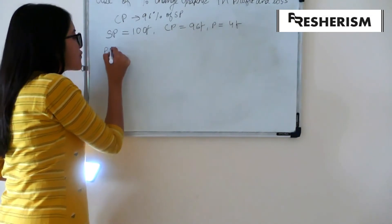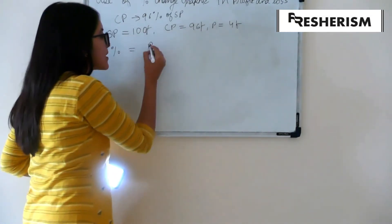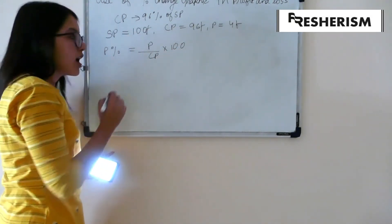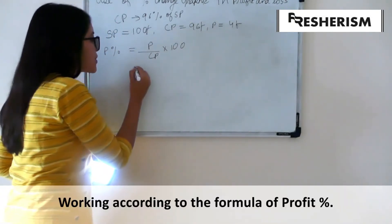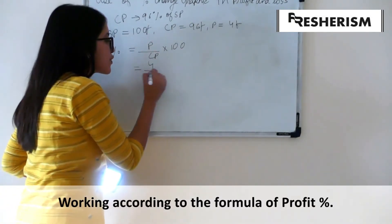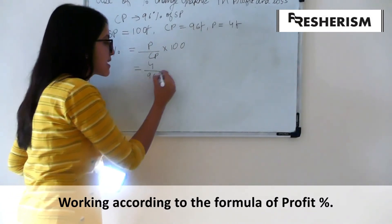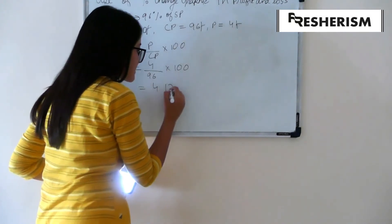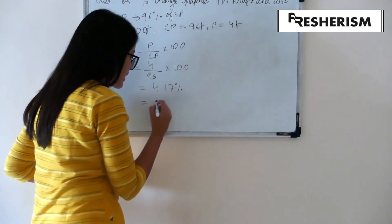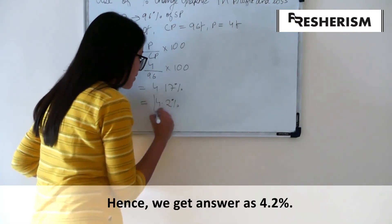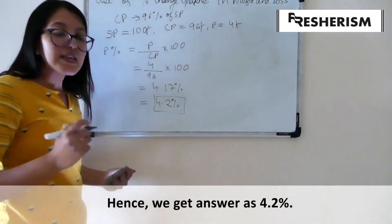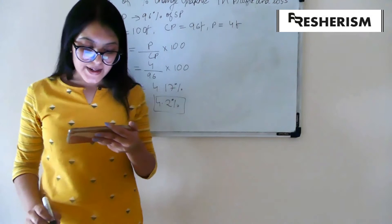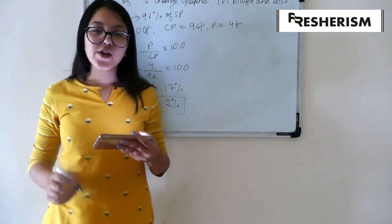Now, we remember that our profit percentage formula was profit upon cost price into 100. Let us put these numericals into this formula now. Profit is 4, cost price is 96 into 100. This gives us 4.17%, which is equivalent to 4.2%. Therefore, giving us the correct option to be option B, which is 4.2%.